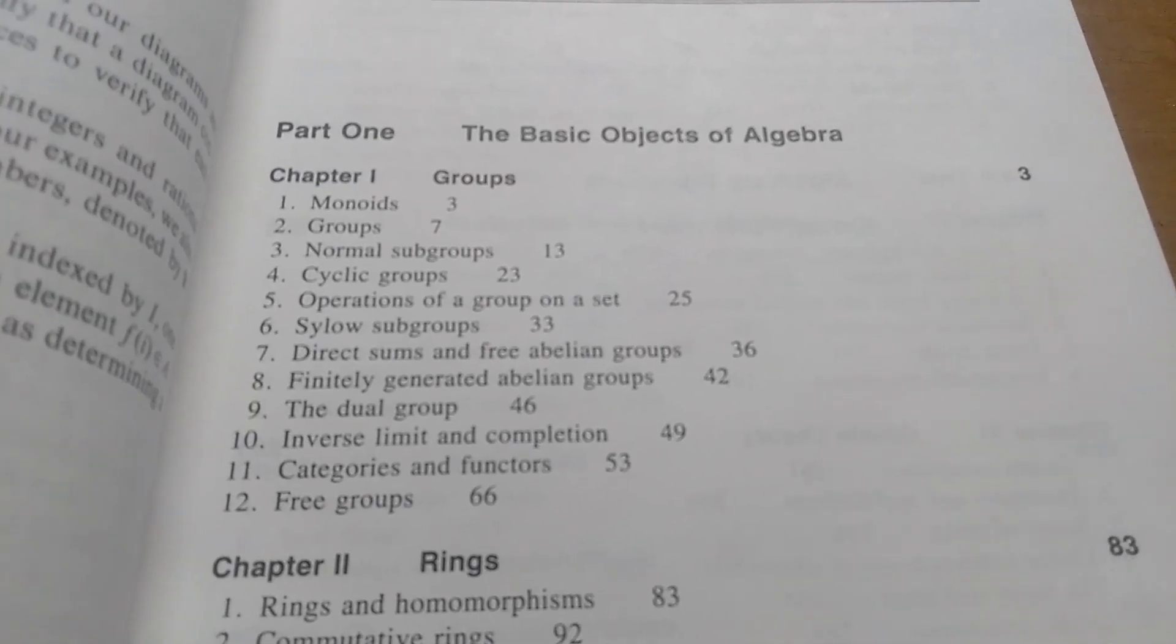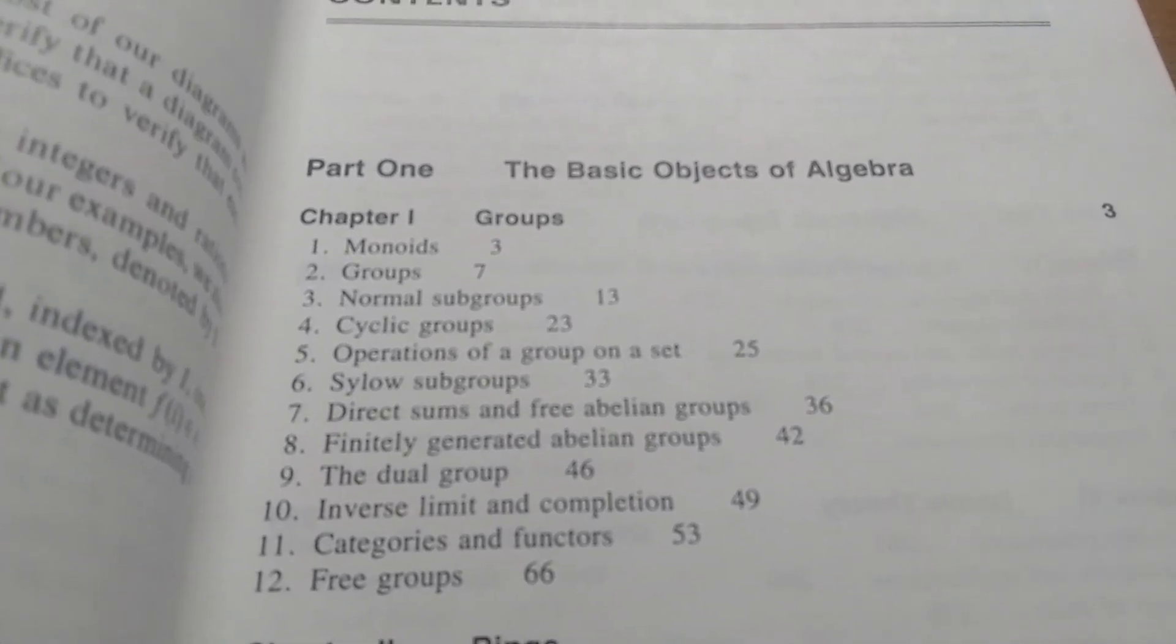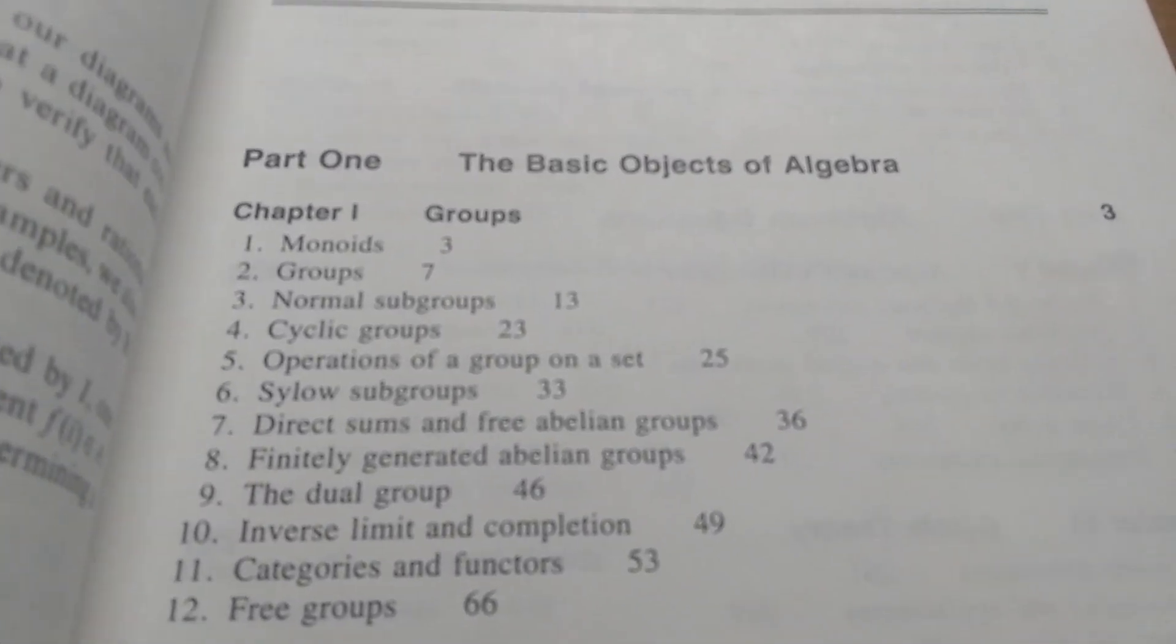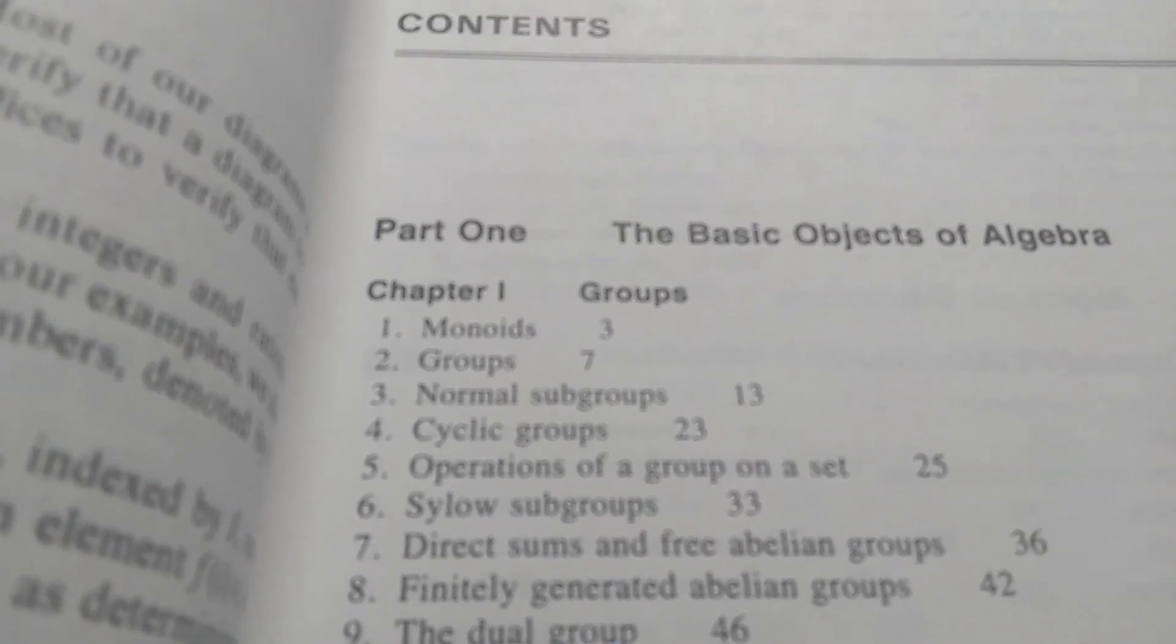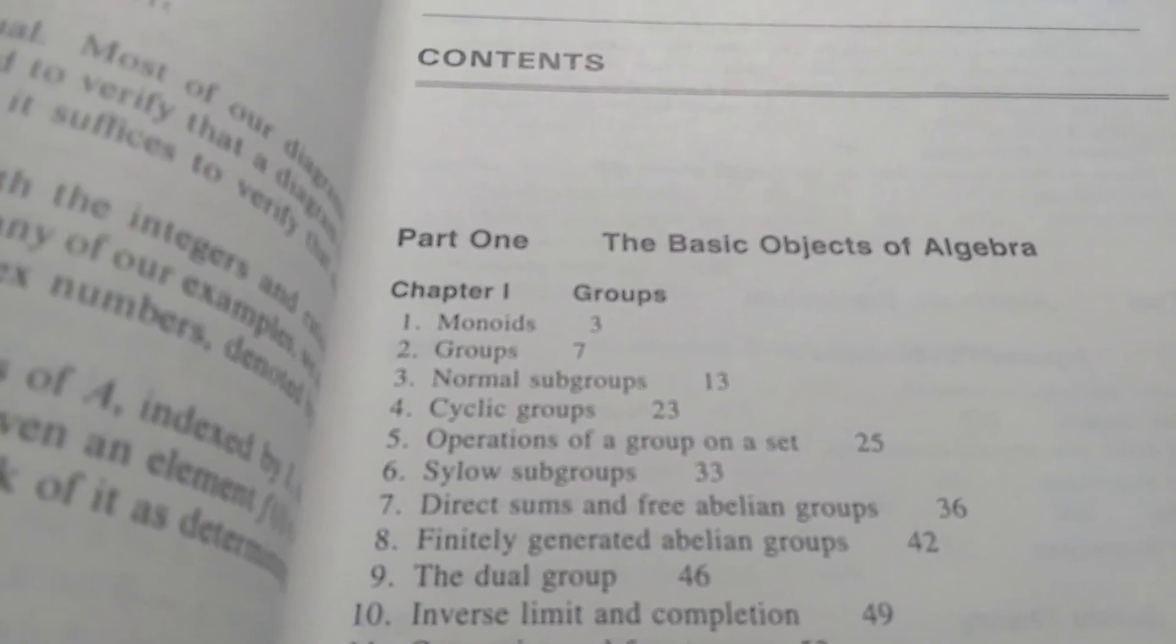Okay, so this is the table of contents for this book. Chapter one is on groups. So he does groups in one chapter. It looks like he starts with monoids, very different from what you see in other books.